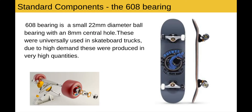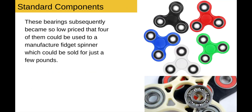Standard components — the 608 bearing. The 608 bearing is a small 22mm diameter ball bearing with an 8mm central hole. These were universally used in skateboard trucks, and due to high demand were produced in very high quantities. These bearings subsequently became so low priced that four of them could be used to manufacture a fidget spinner which could be sold for just a few pounds. Because of the huge quantities manufactured in a standard size, they became really cheap — a very common standard component.